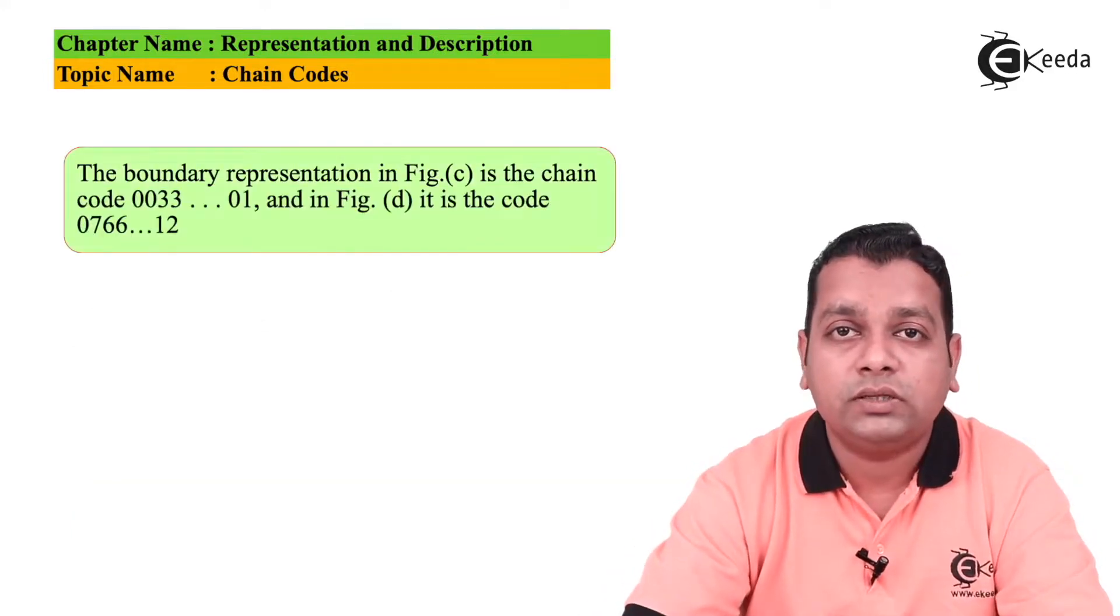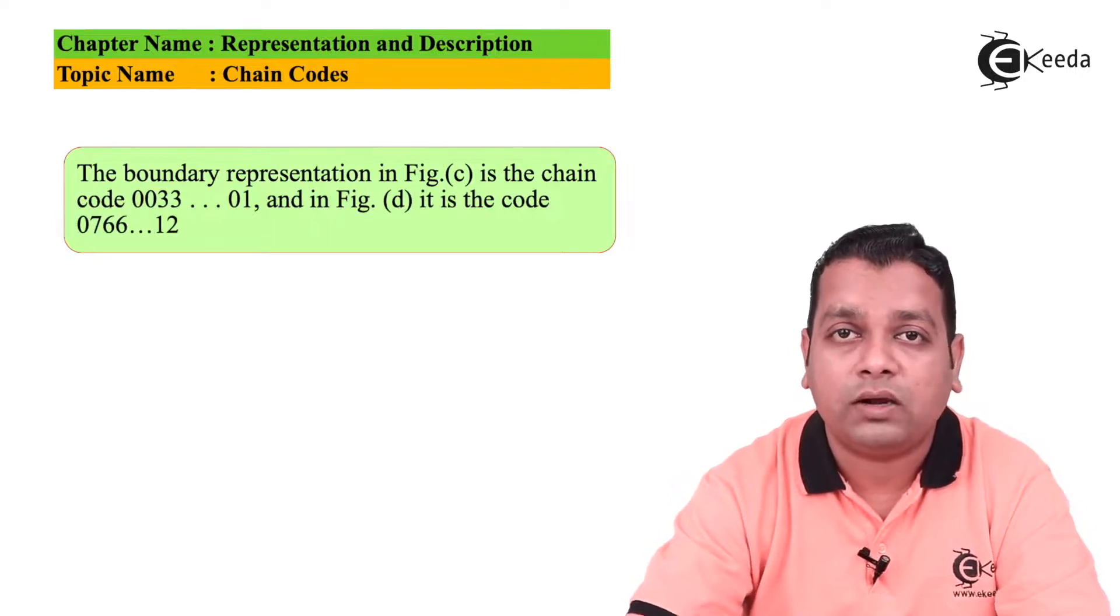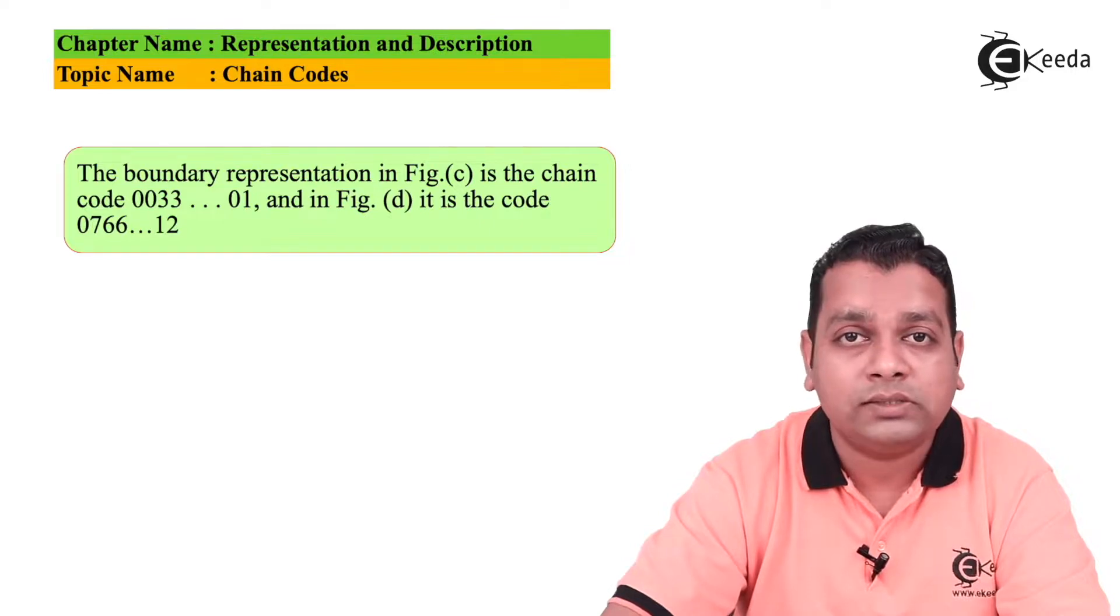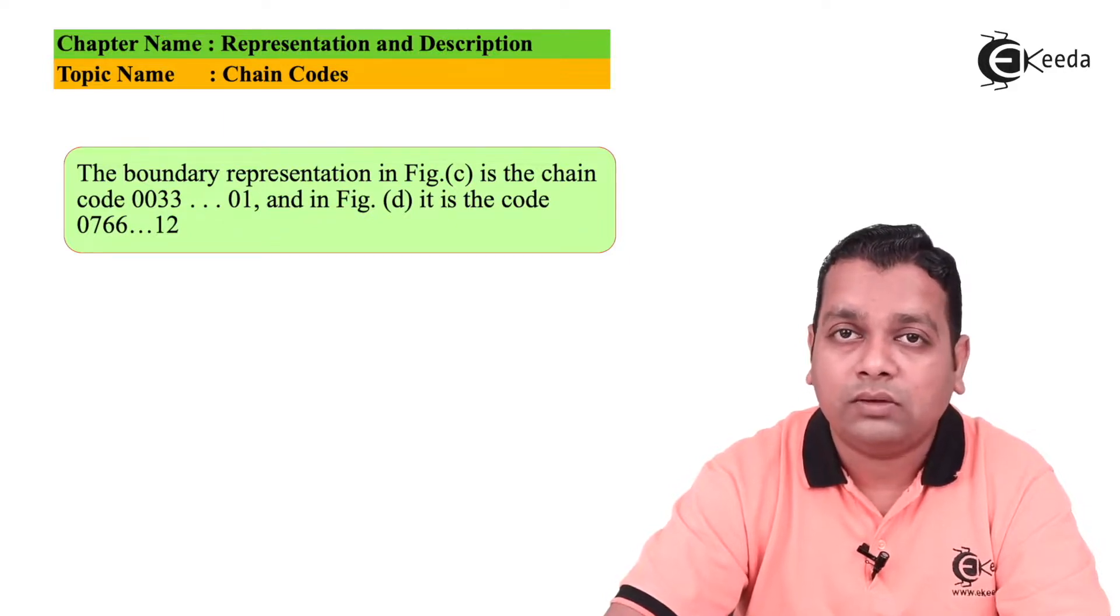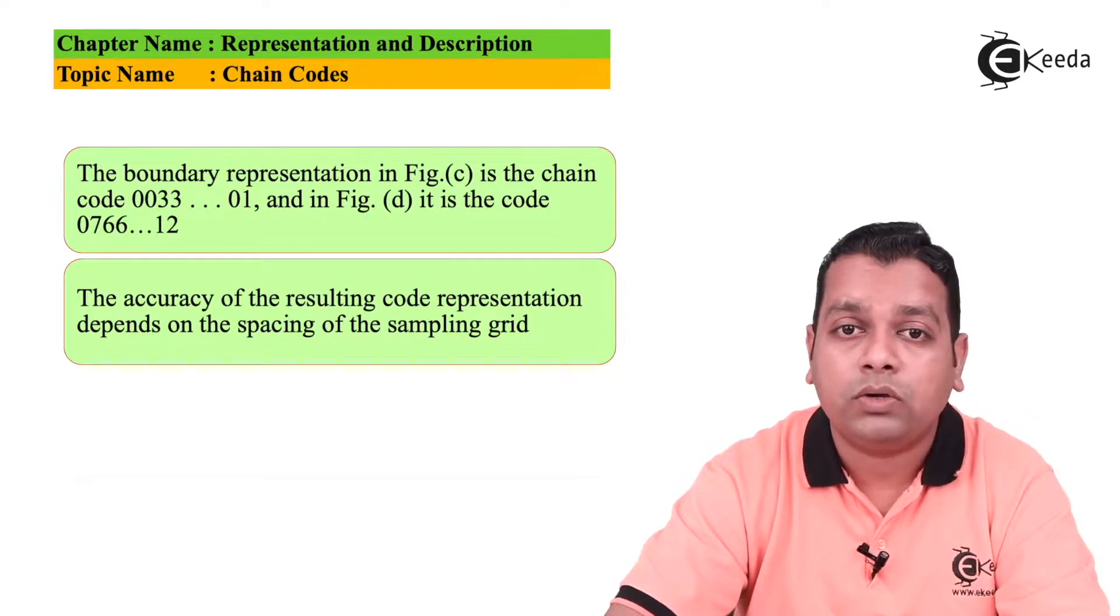Now the boundary representation that we have seen in figure C, the chain code we can write as 0 0 3 3 and so on up to we get back to the original place with 0 1. And on the right hand side we have seen the figure D, the chain code can be represented as 0 7 6 6 as we come back to the original place with 1 2 at last. The accuracy of this resulting code representation depends on the spacing of the sampling grid provided earlier.